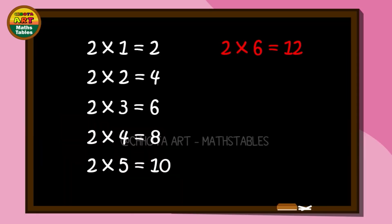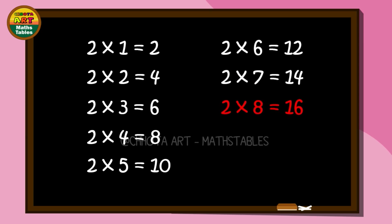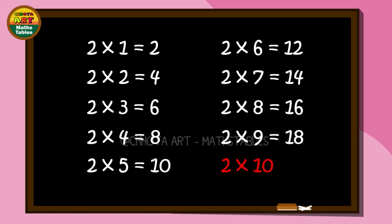Two sixes are twelve. Two sevens are fourteen. Two eights are sixteen. Two nines are eighteen. Two tens are twenty.